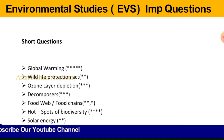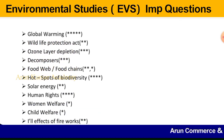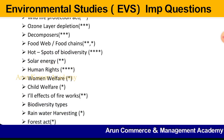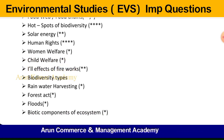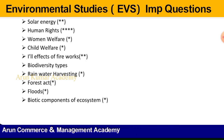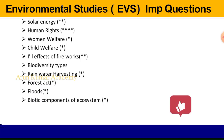Important short question topics include: global warming, Wildlife Protection Act, ozone layer depletion, decomposers, food web, food chains, hotspots of biodiversity, solar energy, human rights, women welfare, child welfare, ill effects of fireworks, biodiversity types, rainwater harvesting, Forest Act, floods, and biotic components of ecosystem. These are all the important and repeated questions from previous papers. I hope this video will be helpful for your EVS exam preparation. If you like this video, please like, share, comment, and subscribe.